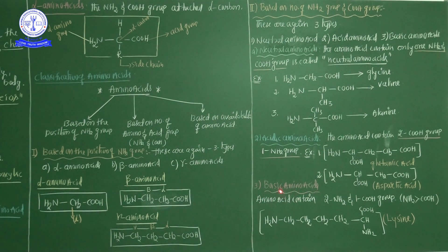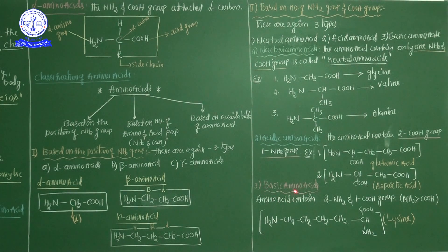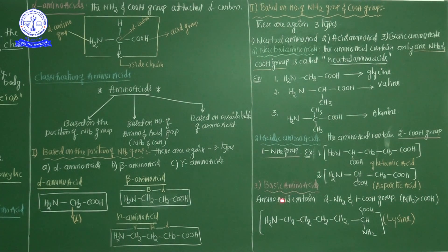Third — basic amino acid. This classification is based on the number of NH2 group and COOH group. Basic amino acids: the NH2 group is maximum, carboxylic acid group is minimum. The amino acid contains two NH2 groups and one COOH group — NH2 is greater than COOH. Since ammonia is a basic group, when the basic groups are maximum, that amino acid is called a basic amino acid.